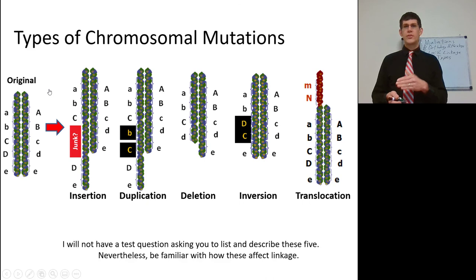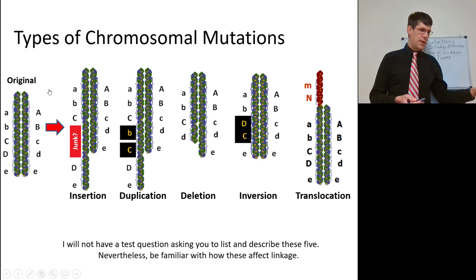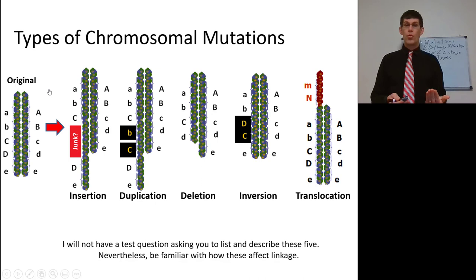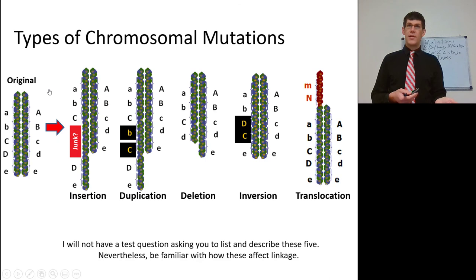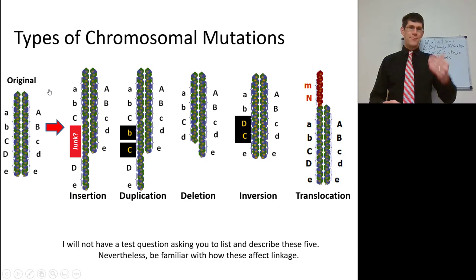Just be familiar with these types of chromosomal changes. We're going to come back to linkage later. This is something to know in general, but I'm not going to ask questions about every specific type. Note also that duplication events lead to paralogous genes, with possible outcomes of sub-functionalization, neo-functionalization, or pseudogenization.